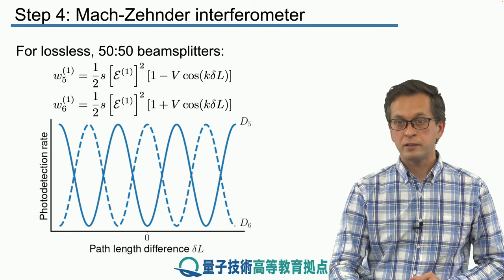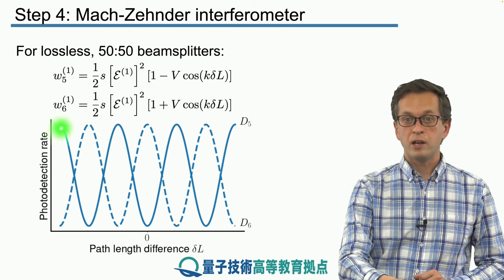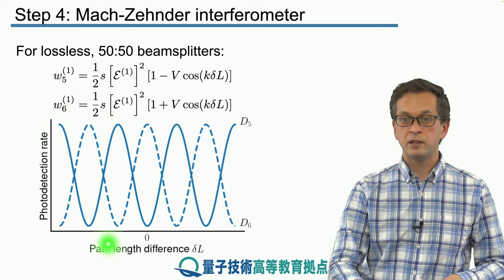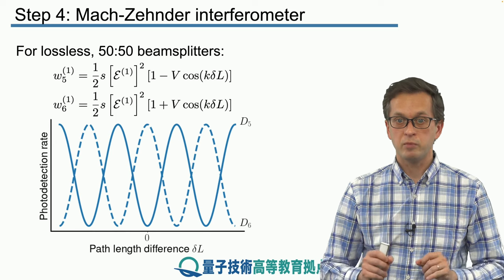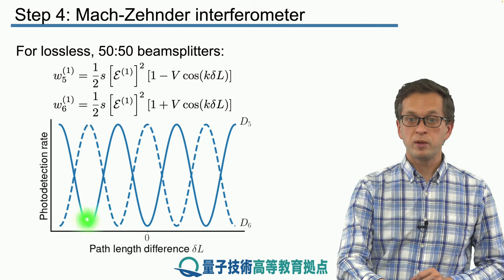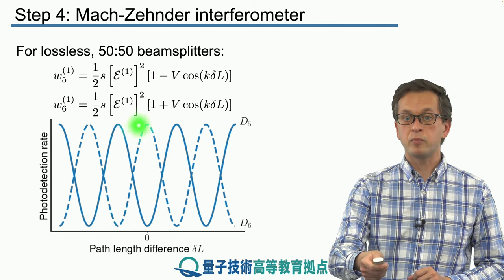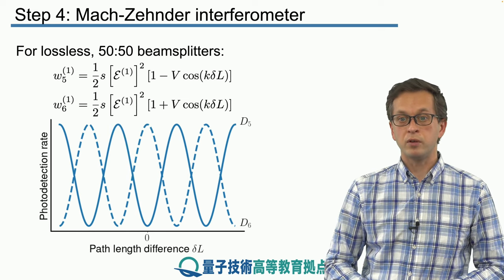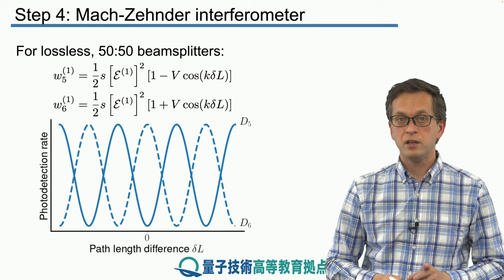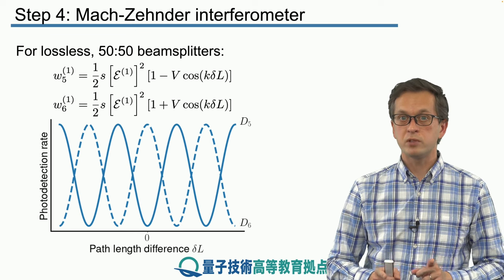We see for detector 5 given by the solid line that it's an oscillating function, and when it is maximum at these points over here, the probability of being detected at D6 is minimum. In the ideal case we will go from 0 probability of being detected at detector 5 to changing the path length and having probability of 1 being detected at detector D5.